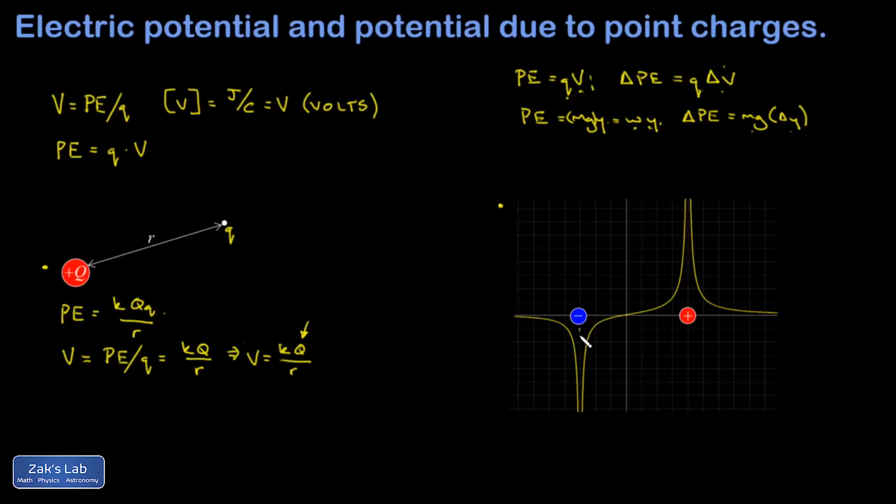Near a positive charge, I have positive potential. The closer you get, the larger it gets. And so near positive charges, I have hills in the electrostatic landscape. And near negative charges, I have valleys.